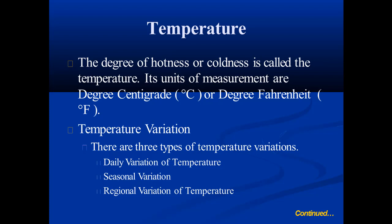Temperature is the degree of hotness or coldness of a body. Its units of measurement are degree centigrade and degree Fahrenheit, also called degree Celsius. There are three types of temperature variation: diurnal variation of temperature, seasonal variation, and regional variation of temperature.